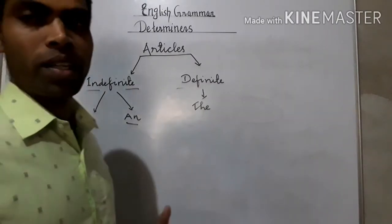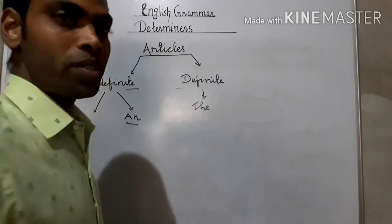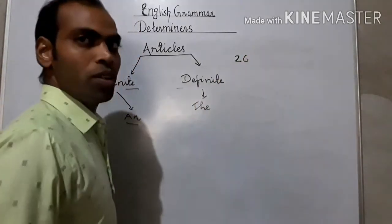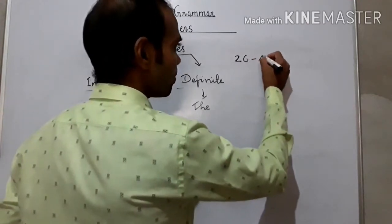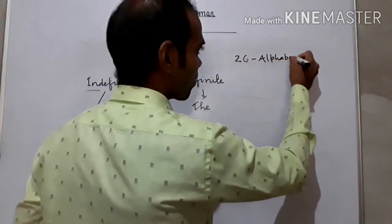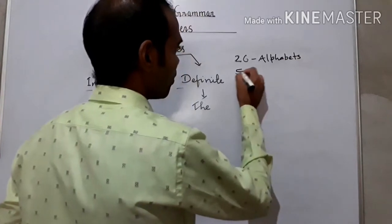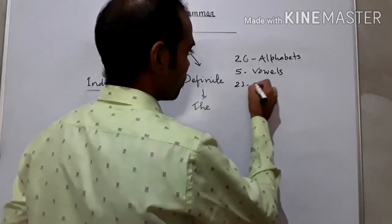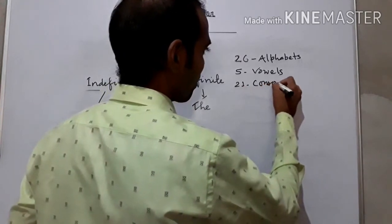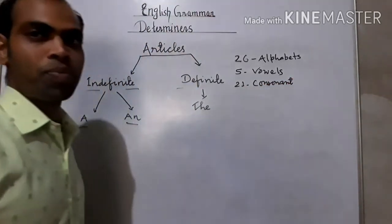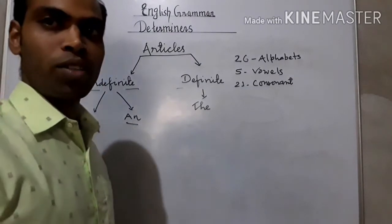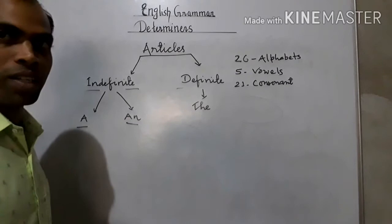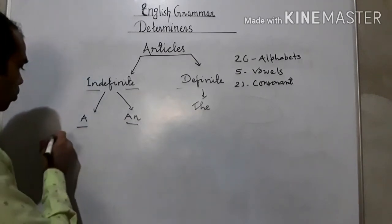We all know that in English language there are 26 alphabets. There are 5 vowels and 21 consonants. So we will see that A and AN are used. A is used as a first point.